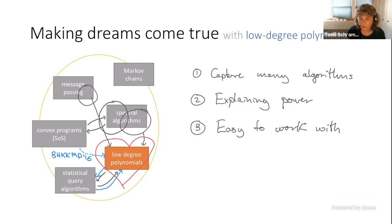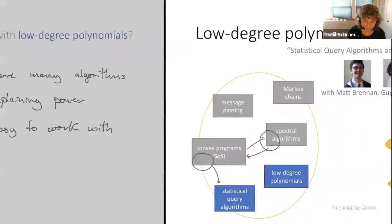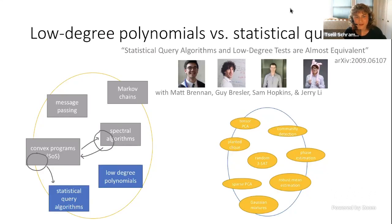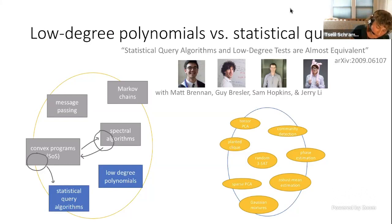So for the rest of the talk, I'll be talking about the correspondence between statistical query algorithms and low-degree polynomials. I don't have a ton of time left so it might be a little hasty, but hopefully that's all right. This is a new paper that we just wrote with Matt, Guy, Sam, and Jerry. I'm very excited about this work. What we do is essentially show that statistical query algorithms and low-degree tests are almost equivalent — the 'almost' is precise enough that we're able to get a lot of lower bounds for free.